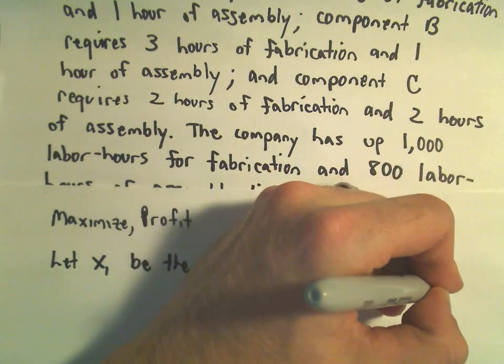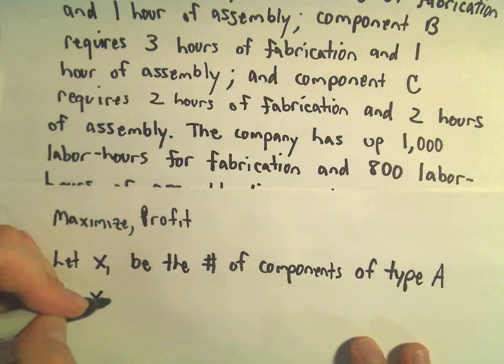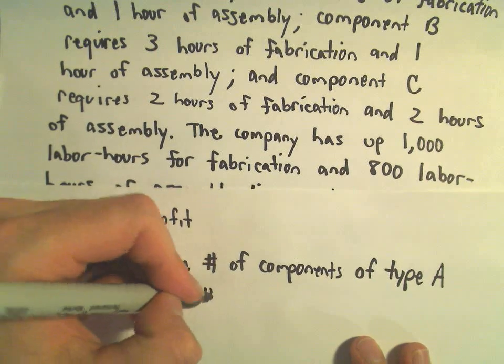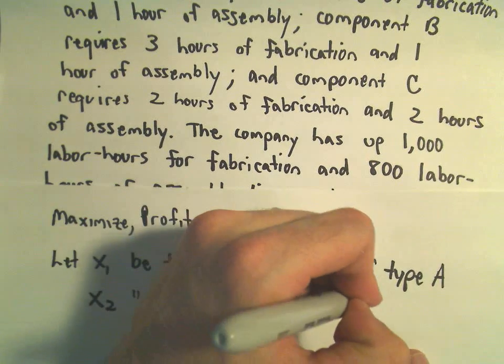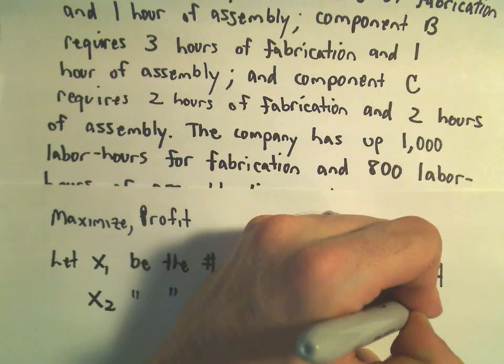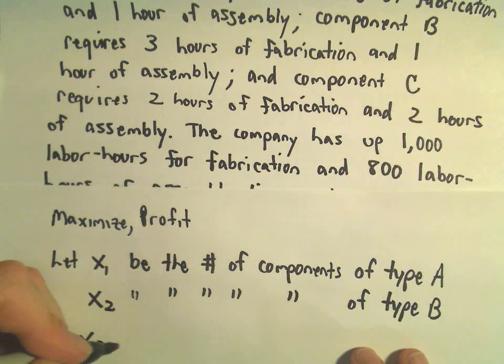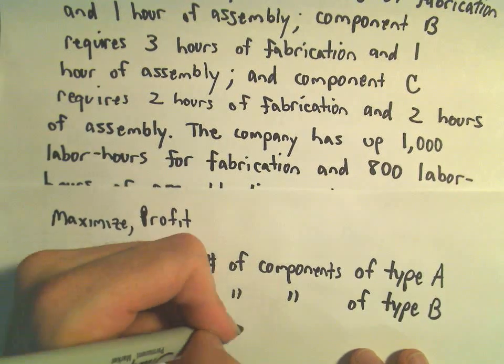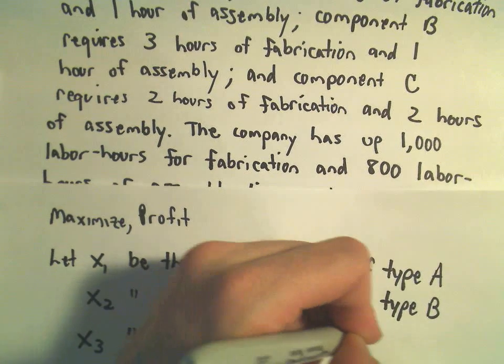We'll let x₂ be the number of components of type B, and we'll let x₃ be the number of components of type C.